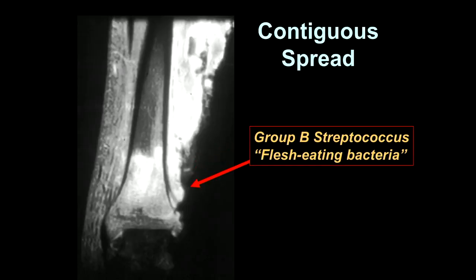Contiguous spread can occur from the skin in other situations besides ulceration. This is a patient with Group B streptococcus infection — the classic flesh-eating bacteria that ate through the skin, the soft tissues, and into the bone.